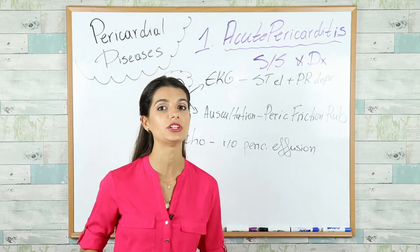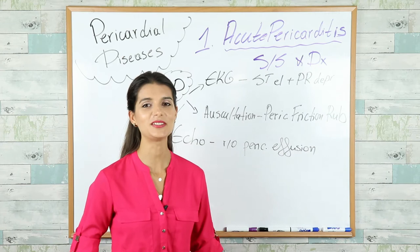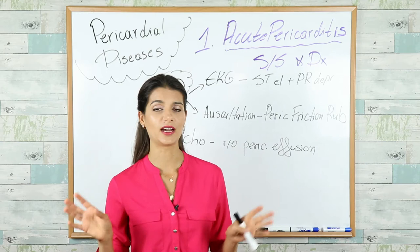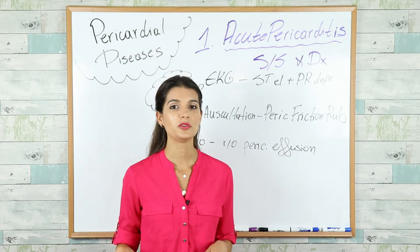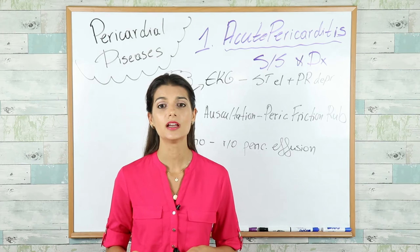On Step 1 and Step 2, they like giving you heart sounds to diagnose, so I'd highly recommend listening to heart sounds online if you don't have direct access to patients — so you get used to recognizing different sounds and can diagnose them fast on exam day. You also want to do a cardiac echo to rule out pericardial effusion in these patients.